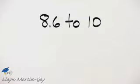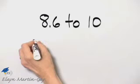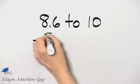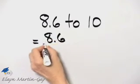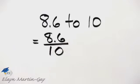Our directions are to write this ratio as a fraction in simplest form. We have 8.6 to 10, so in fraction form this is 8.6 over 10.